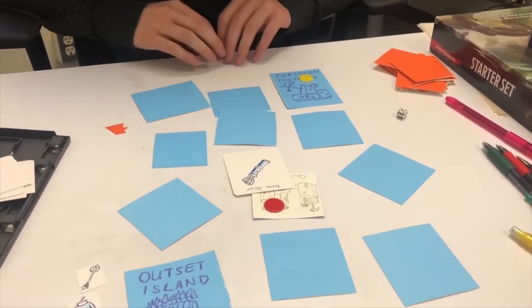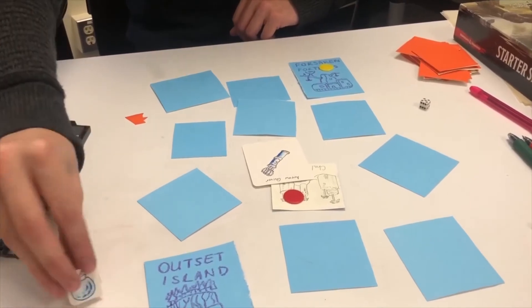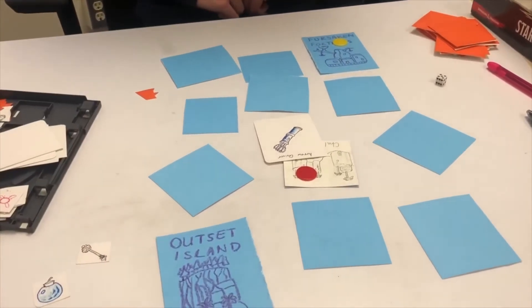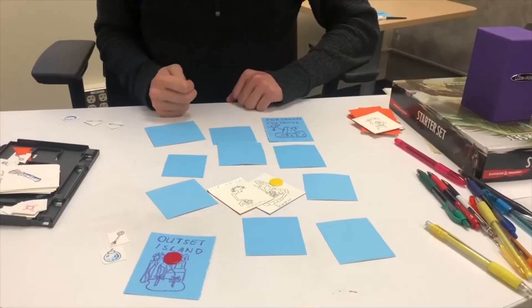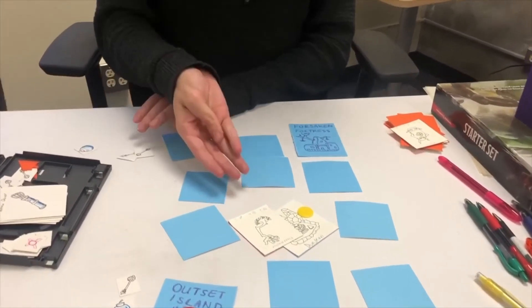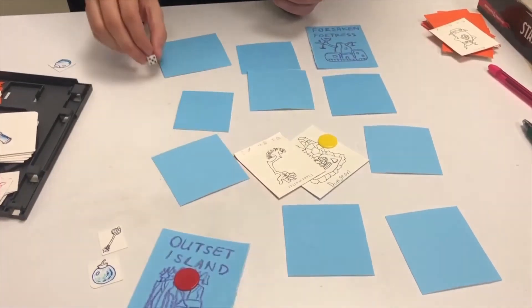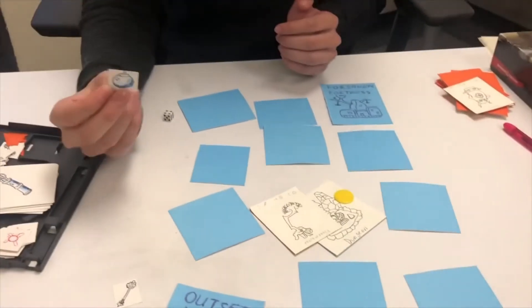When you die, all arrows and bombs that you have are discarded. However, when you respawn, you grab one bomb and one arrow. Bombs and arrows in combat can prove very useful. Spend as many arrows as you want before you roll to add that amount to your result. You can also use a bomb to deal one damage to a monster.